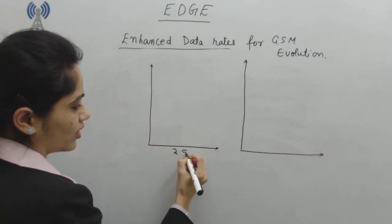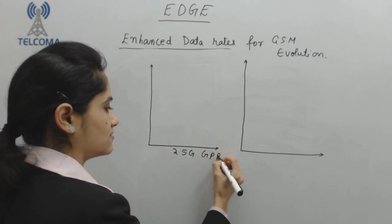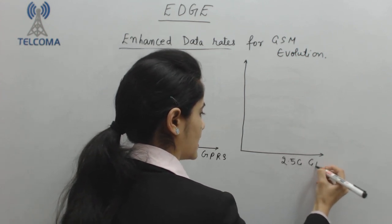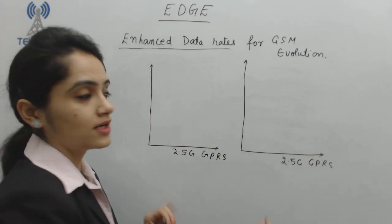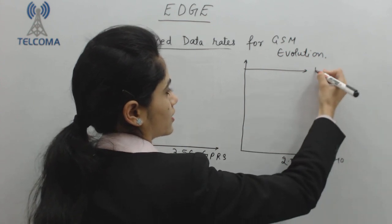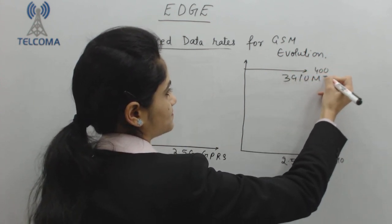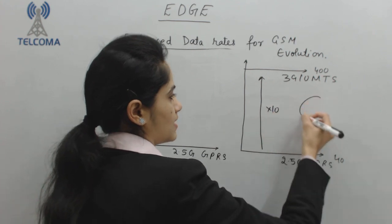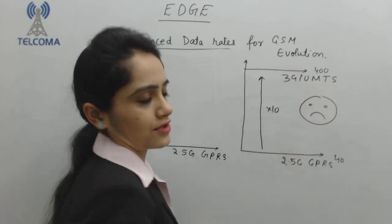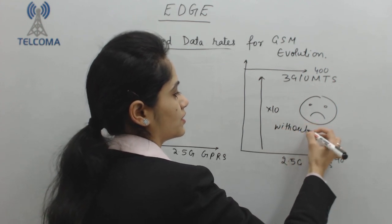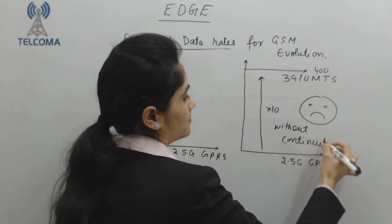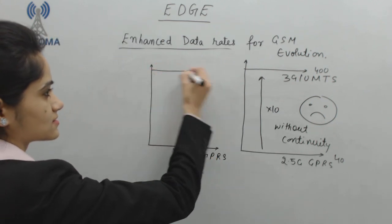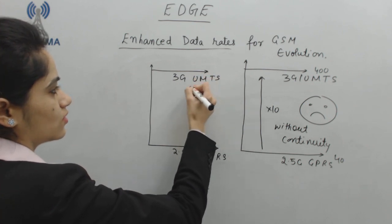This is my 2.5G, whose technology name is GPRS — General Packet Radio Service. What we want is to go from 40 kbps to 400 kbps, because this is my 3G UMTS. I require a jump of 10 times, but this is without continuity — practically it would not be possible to achieve that much of a jump directly.